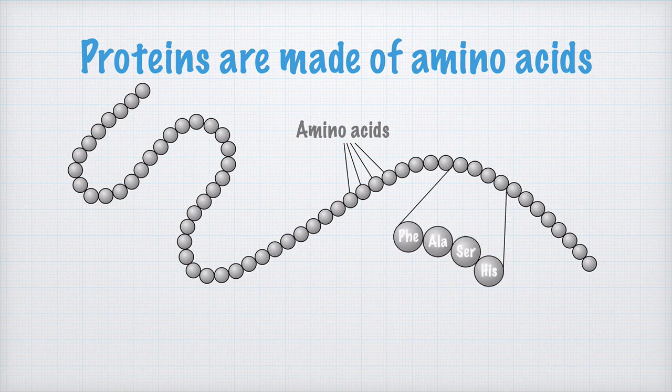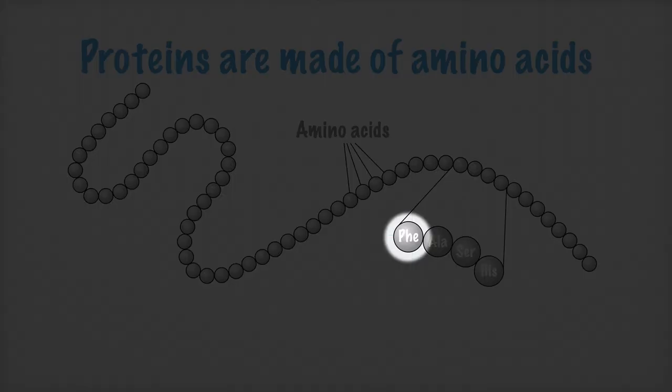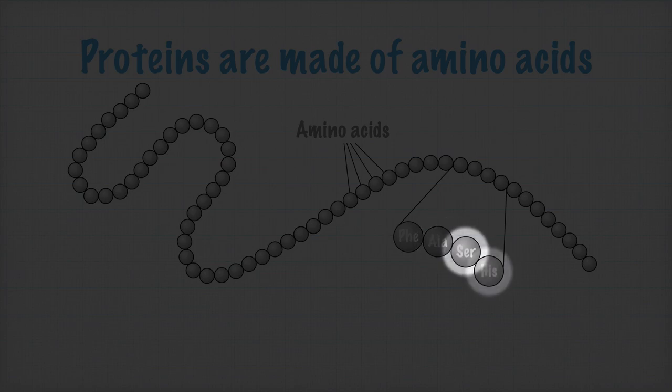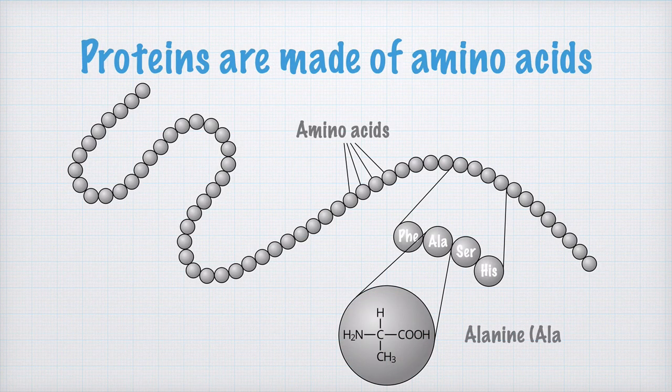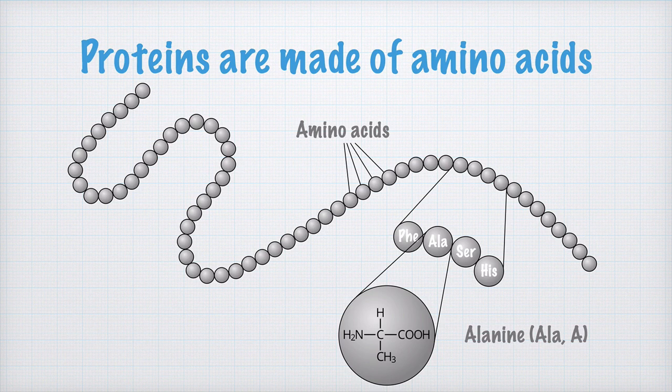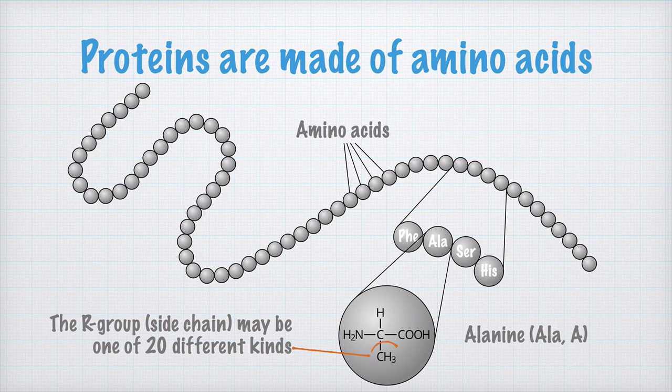The amino acids may be, for example, phenylalanine, alanine, serine, and histidine. Alanine has this structural formula. Different amino acids have different R groups, which, in all living cells, is one of 20 different kinds.